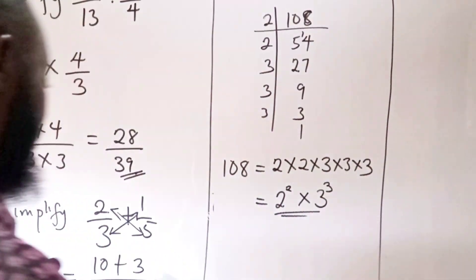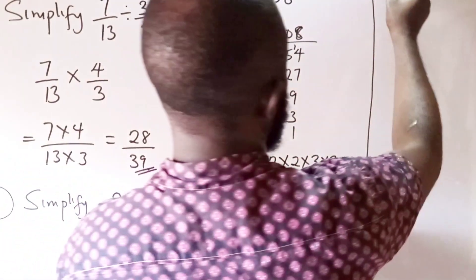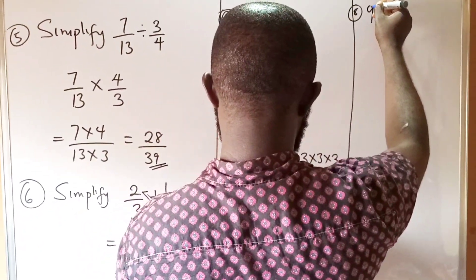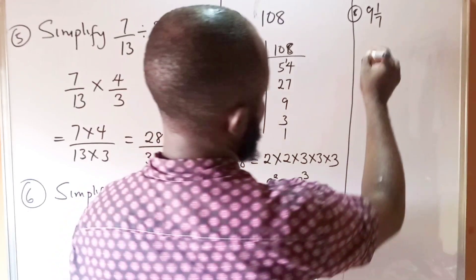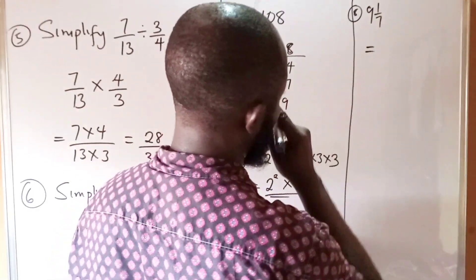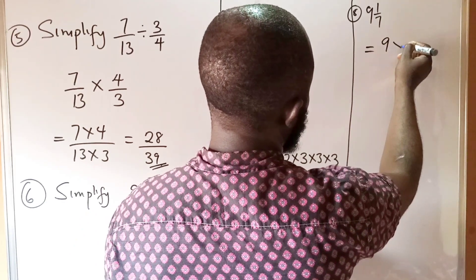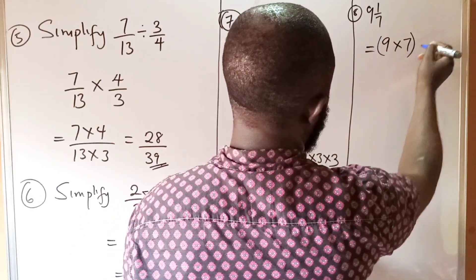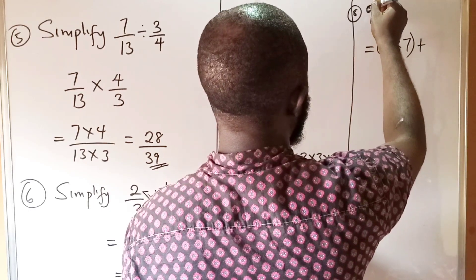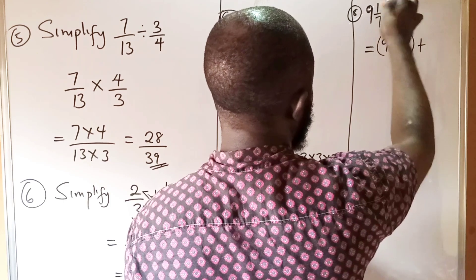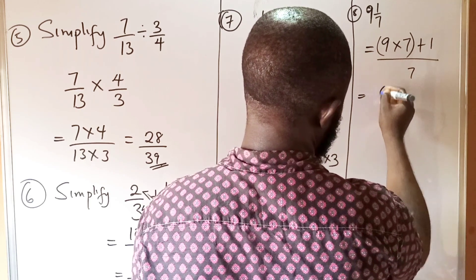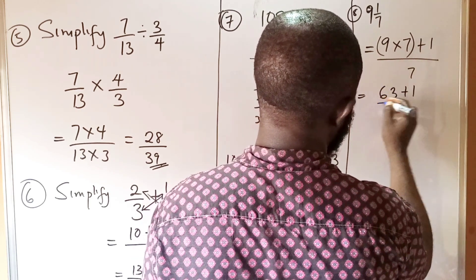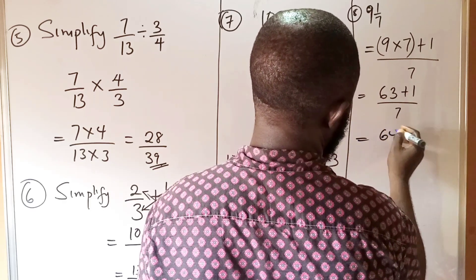For question number eight, convert 9 and 1 over 7 as an improper fraction. This is a mixed fraction. We multiply the whole number by the denominator and add the numerator: 9 multiplied by 7 is 63, plus 1 gives 64, all over 7. So the answer is 64 divided by 7.